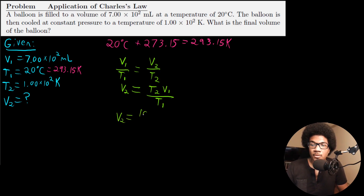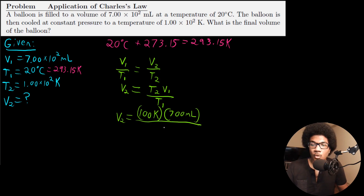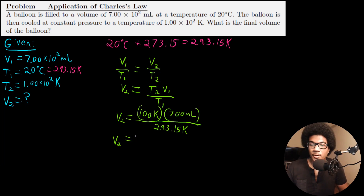V2 equals the final temperature of 100 Kelvin times the initial volume of 700 milliliters, divided by the initial temperature of 293.15 Kelvin. When you do the math, we get a final volume of 238.79 milliliters.